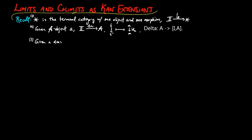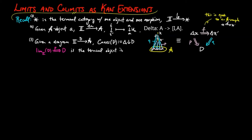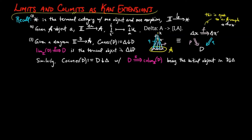And three, given a diagram d in a category a, the category of cones on d is defined as the category delta over d. There is a direct translation between cones as compatible sources, as depicted on the left, and the commuting diagrams of natural transformations on the right. The limit cone of d is a terminal object in the category of cones on d. Dually, the category of co-cones on d is defined to be the category of d over delta, with the co-limit cone of d as the initial object in the category of co-cones on d.